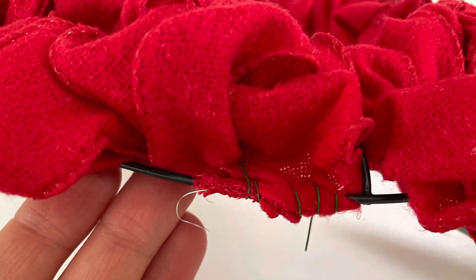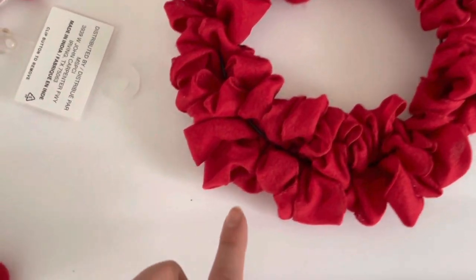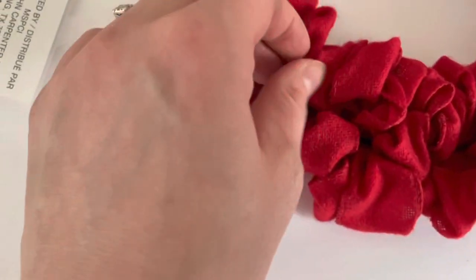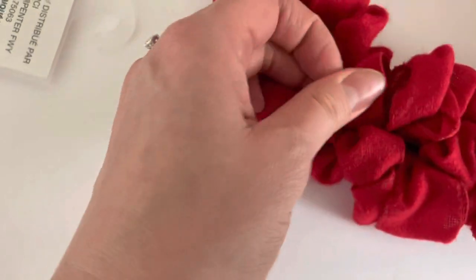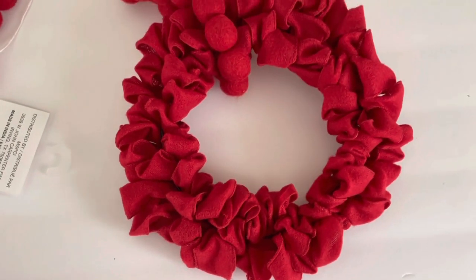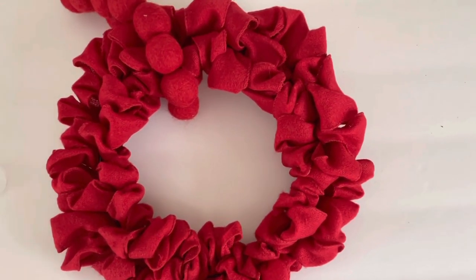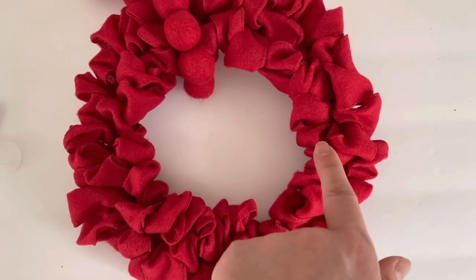My wreath was complete, but I did notice a couple areas where I could see the wire of the wreath form sticking through. I just went back through and fluffed up my ribbon around the wire wreath so you couldn't see it anymore. Just fluffing the ribbon helped to hide the wire wreath form.